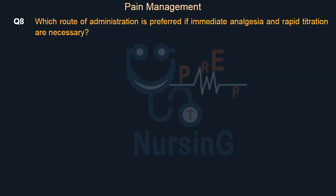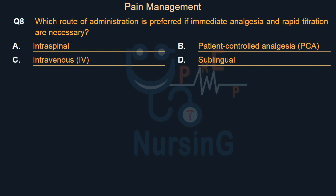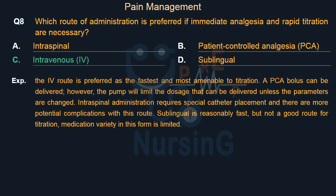Which route of administration is preferred if immediate analgesia and rapid titration are necessary? Option A: Intraspinal. Option B: Patient-controlled analgesia (PCA). Option C: Intravenous (IV). Option D: Sublingual. Right answer is Option C: Intravenous. The IV route is preferred as the fastest and most amenable to titration. A PCA bolus can be delivered; however, the pump will limit the dosage unless parameters are changed. Intraspinal administration requires special catheter placement and has more potential complications. Sublingual is reasonably fast but not a good route for titration, and medication variety in this form is limited.